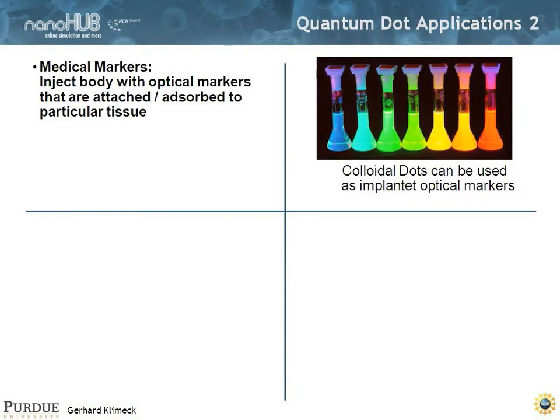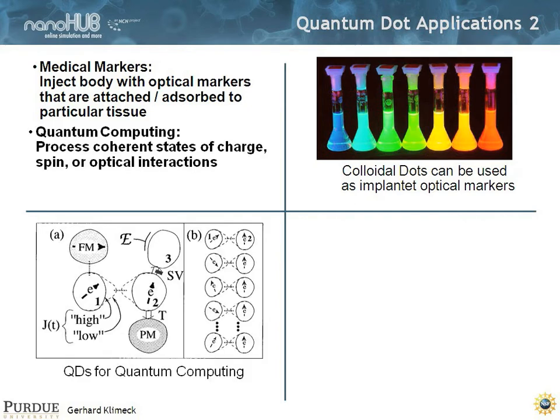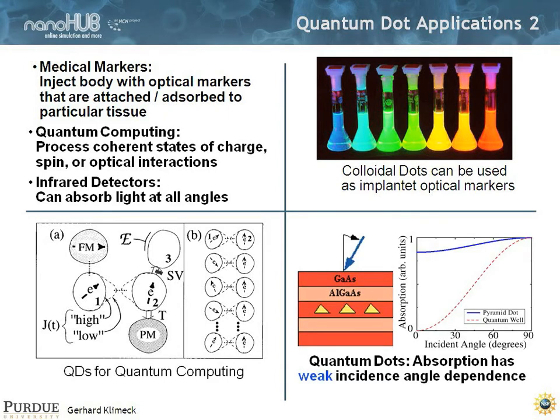There's other applications, quite likely for medical markers, that's being pursued strongly. For quantum computing, where you carry spin information. And also for optical detectors, because the absorption of quantum dots can be different very much from the absorption of quantum wells.